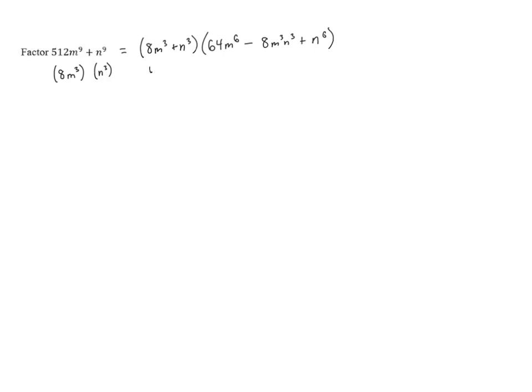8m cubed is 2m quantity cubed and n cubed is n cubed. So again we have another sum of cubes that we can break down even further. When we break down this sum of cubes we have 2m plus n.